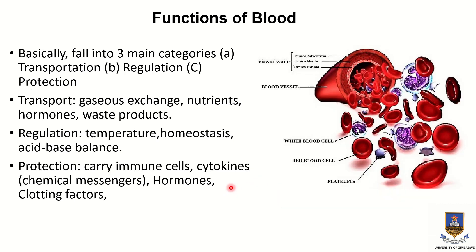The functions of blood include three basic categories: transportation, regulation, and protection. Under transportation, blood contains red blood cells which carry hemoglobin, which has the capacity to bind and release oxygen and carbon dioxide. Blood plasma also enables transportation of nutrients, hormones, and waste products.